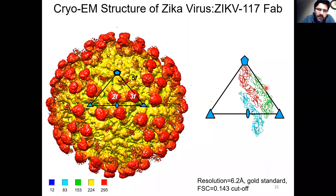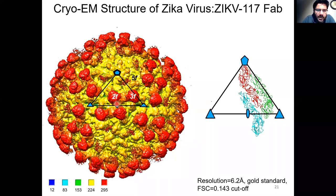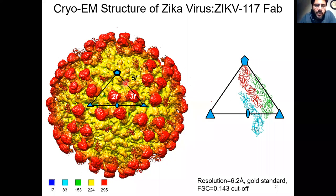As each asymmetric unit contains three individual copies of the E-protein, we expected to find three copies of the ZIKV-117 FAB bound per asymmetric unit — one FAB bound to each of the three individual chains. The FAB position closest to the twofold axis was named 2F, and the FAB position closest to the threefold axis was named 3F. The FAB position closest to the fivefold axis, named 5F, was found to contain very poor density for the FAB, meaning the FAB is unable to bind at this site. This was completely unexpected.